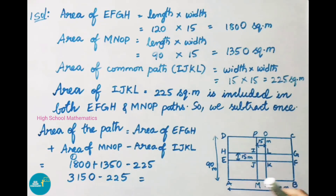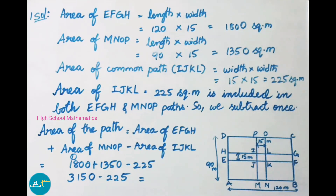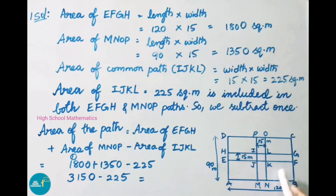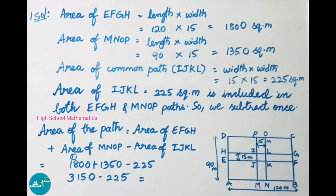Observe that the area of IJKL, that is 225 square meters, is included in both EFGH and MNOP. So we must subtract it once. Therefore, we shall now find the area of these two paths which are parallel.